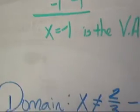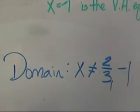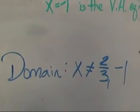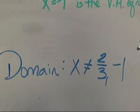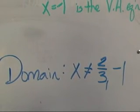Well, these two values also tell me that for the domain of this particular function, the domain says that x can be any value except for 2 thirds and negative 1.